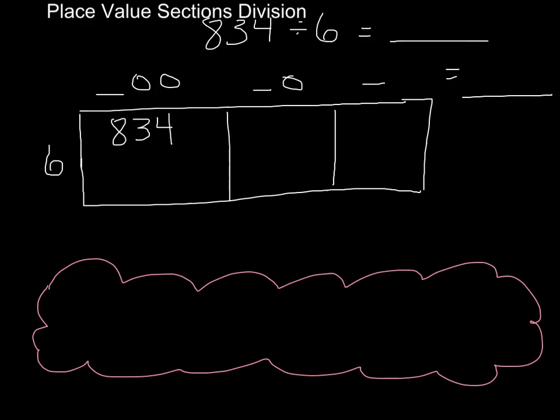There are a lot of different ways to go about division when you've got bigger dividends, and one is the place value sections method of division. If you like the place value sections method of multiplication, then this may be your preferred method for division as well.